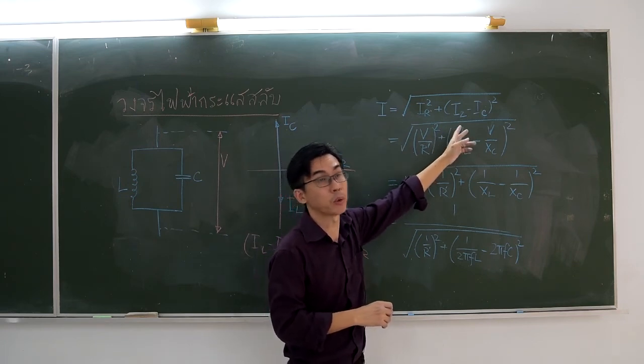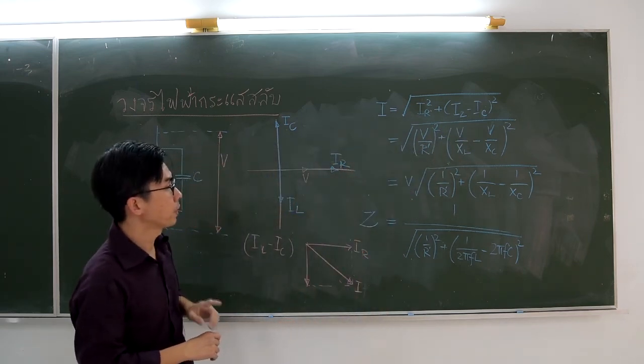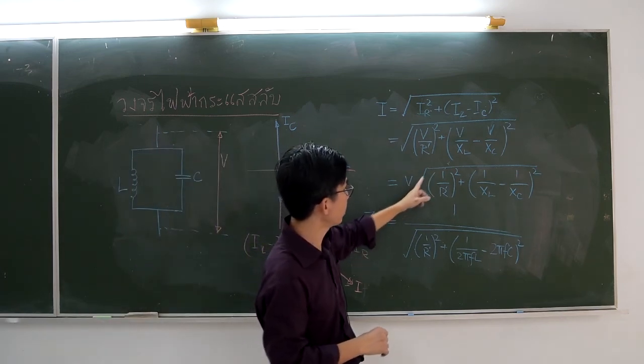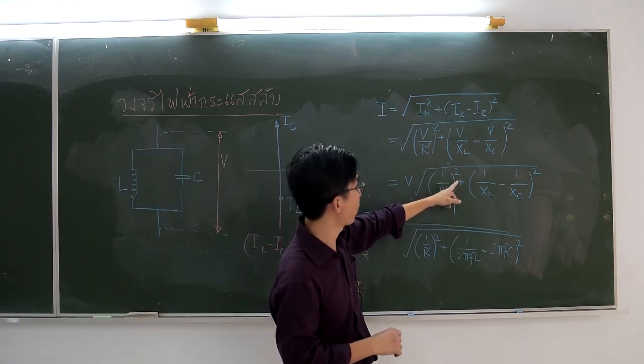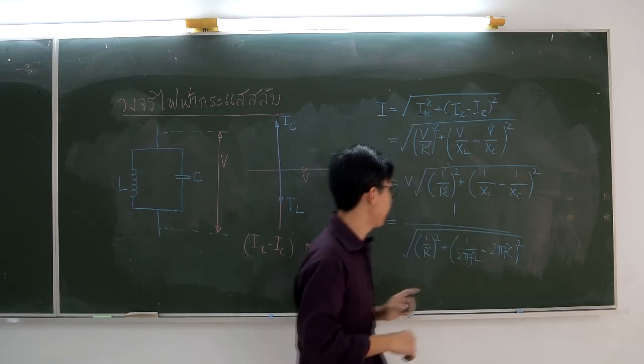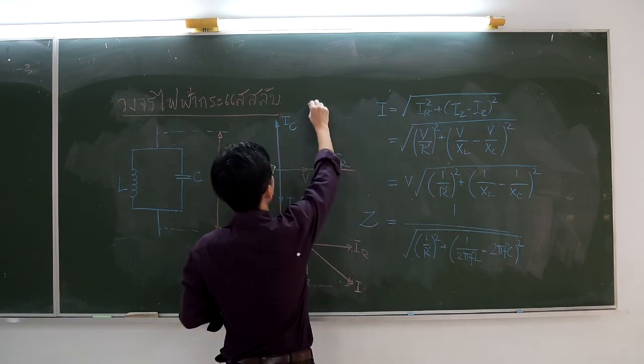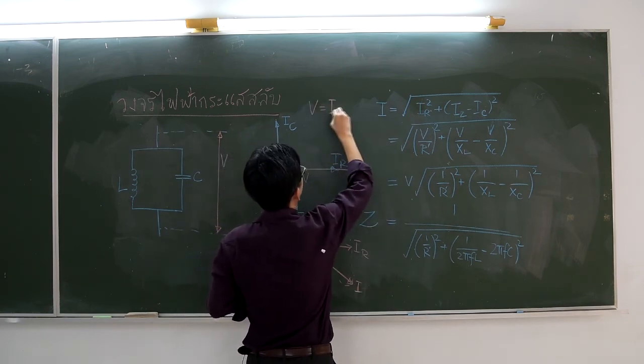Again, using Ohm's law, V equals IZ. The impedance is written as 1 over the square root of 1 over R prime squared plus 1 over XL minus 1 over XC squared. This is the impedance for the parallel circuit.